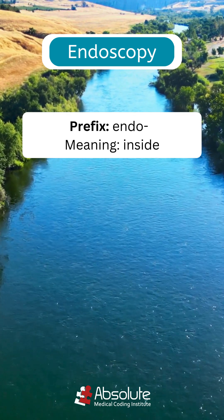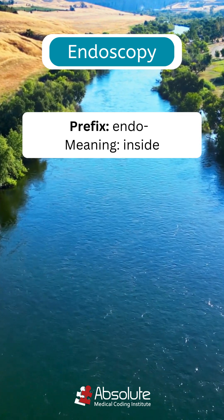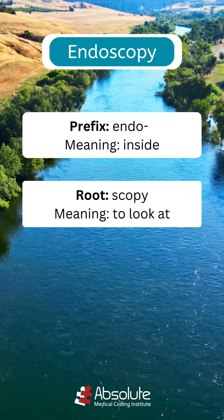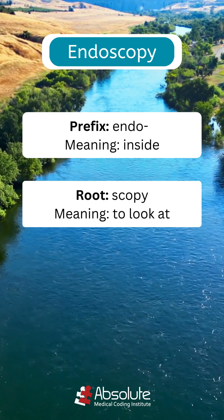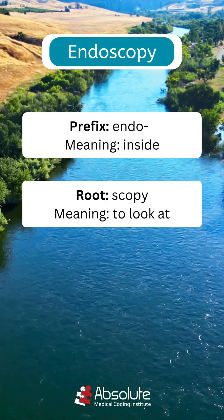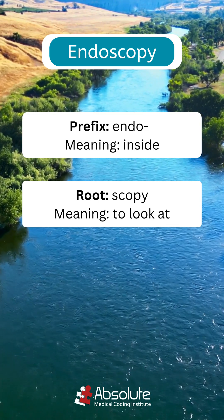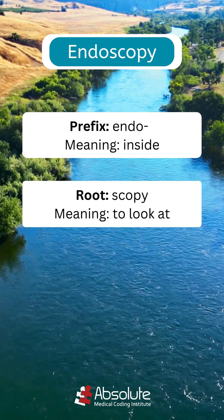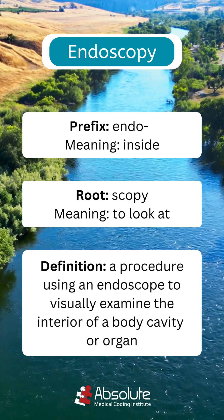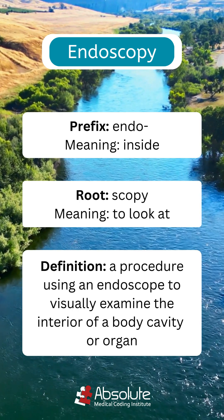The prefix endo, from Greek endon, means inside. The root word scopi, from Greek scopine, means to look at. When you combine the prefix and the root word, you get the definition: a procedure using an endoscope to visually examine the interior of a body cavity or organ.